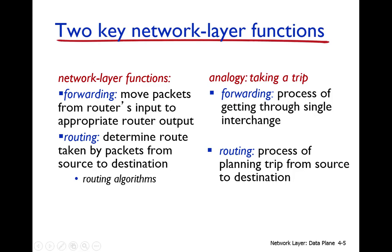An analogy: routing is like planning a trip from Peshawar to Islamabad — you evaluate multiple options such as taking an aeroplane or driving, and select the best route. Forwarding is the actual process of moving from one point to the next along that chosen route — the process of getting through a single interchange.